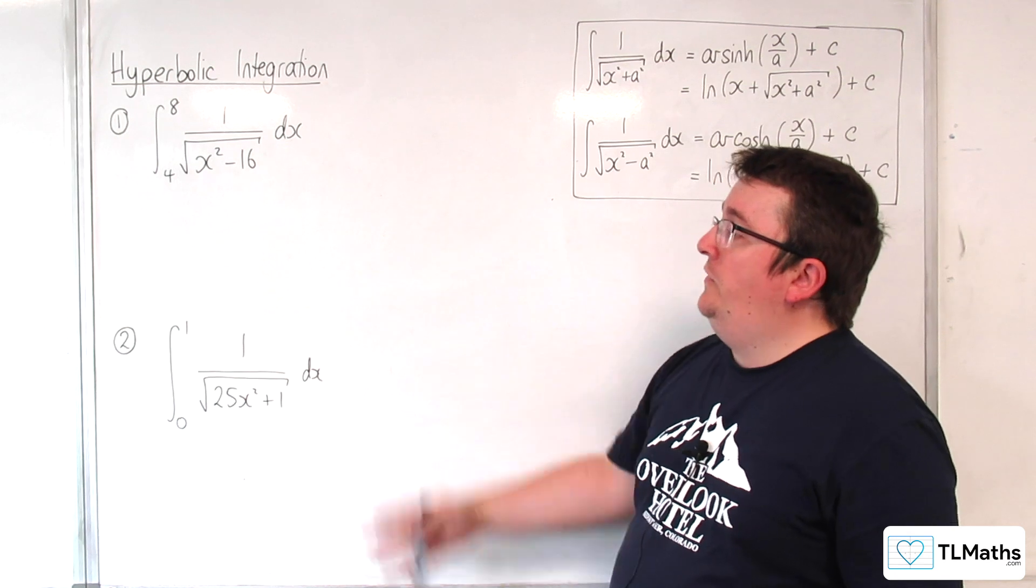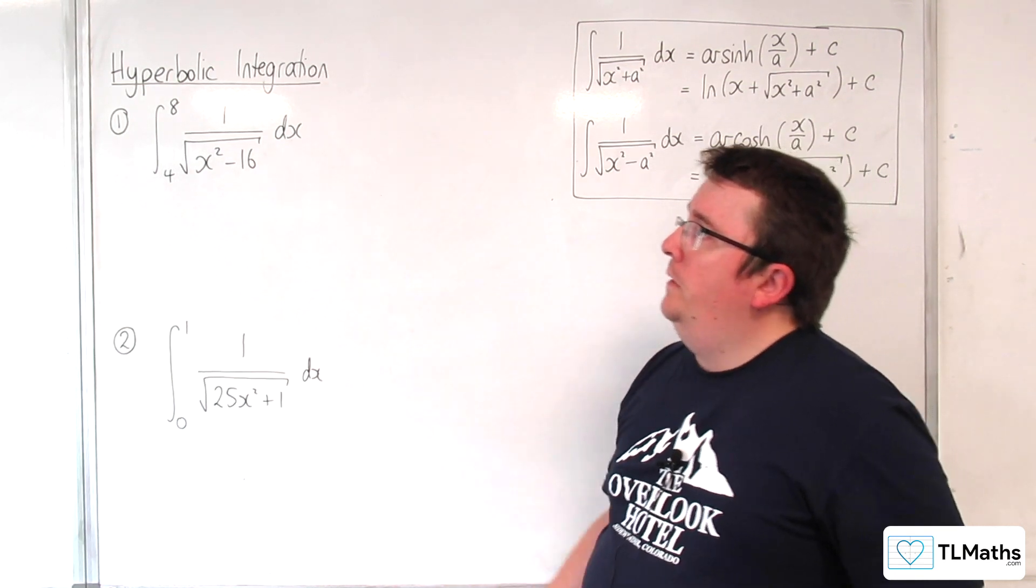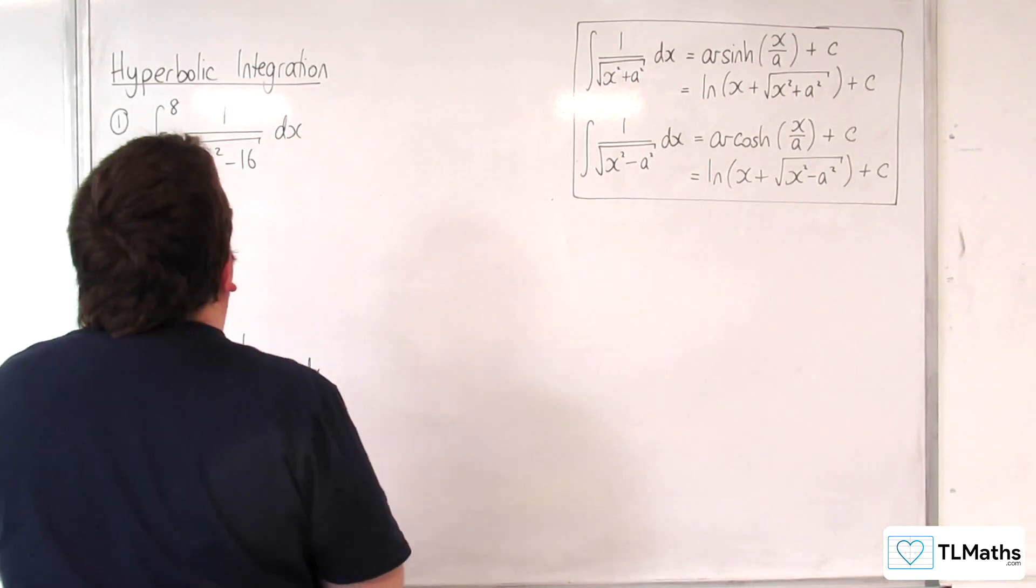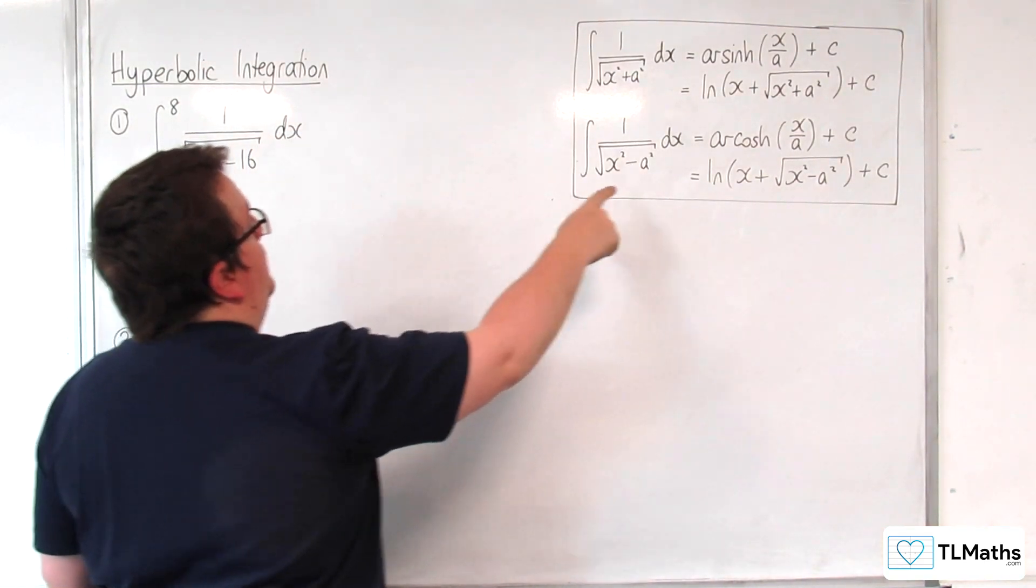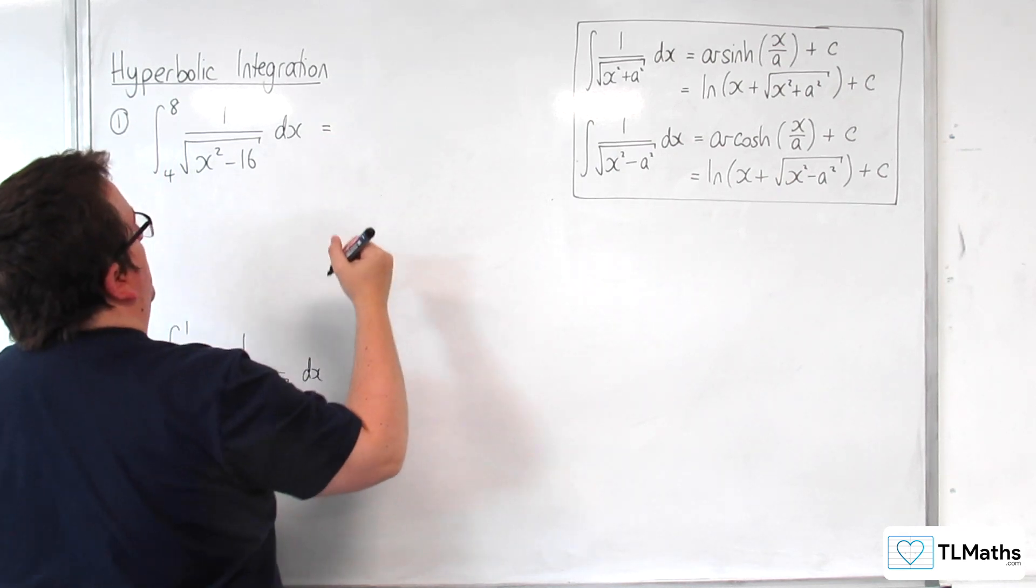In this video, I'm going to be evaluating these two definite integrals. This first one has 1 over the square root of x squared minus 16. That's already in the standard form, so I can integrate this directly.